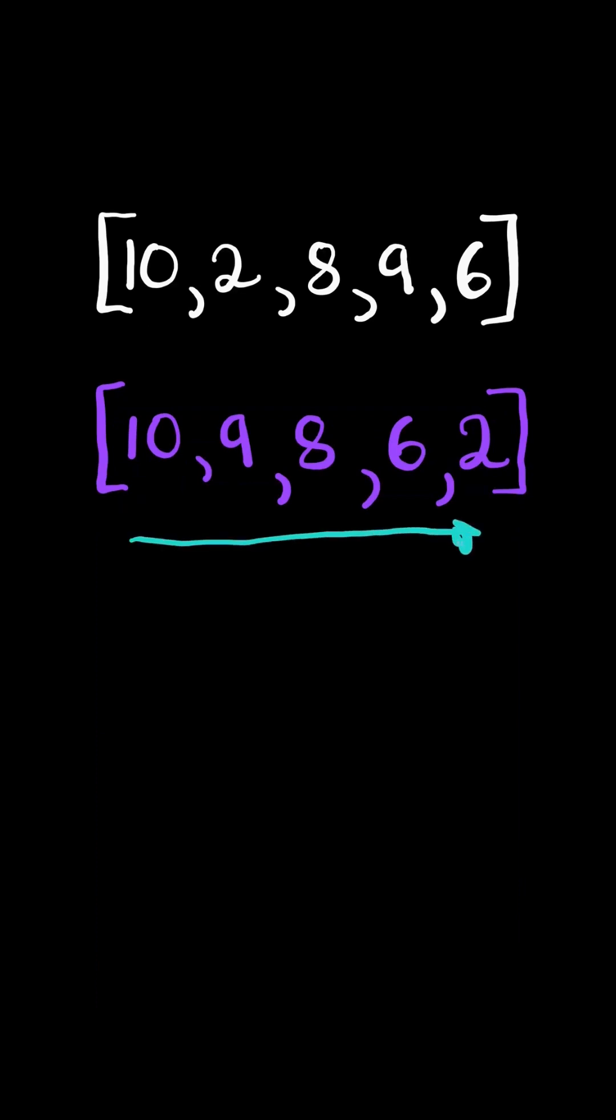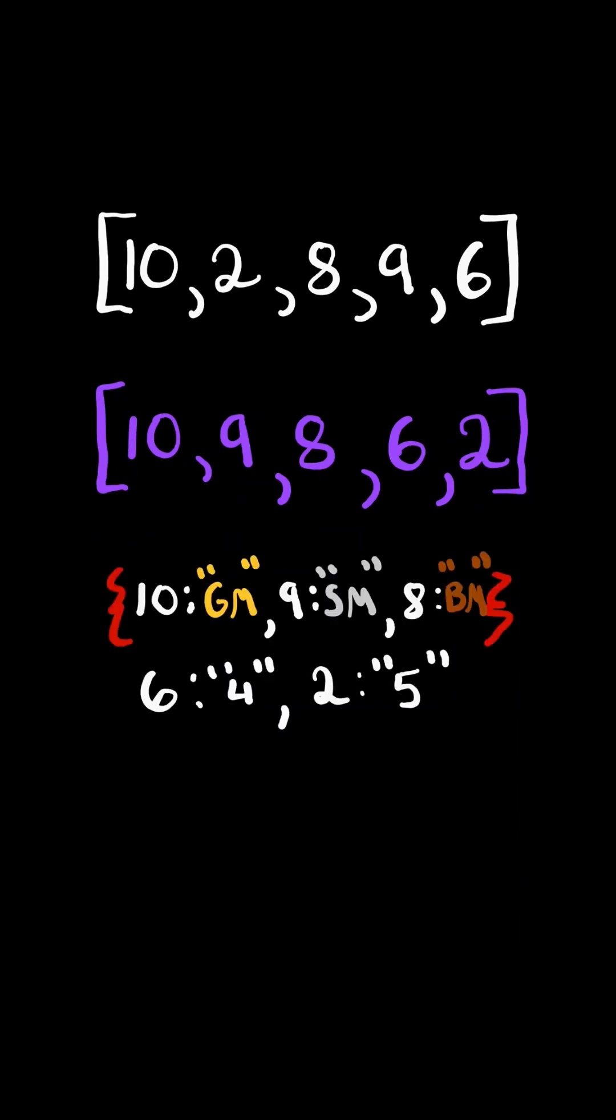Then we iterate through the sorted list and create a hash map mapping the score to its placement. The top three scores get a medal and the other scores get a numbered rank.